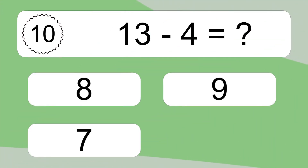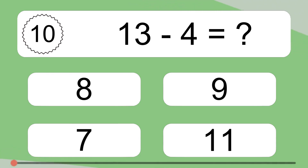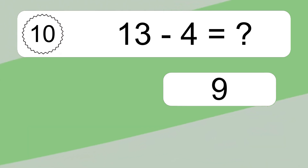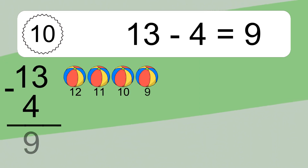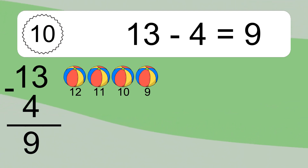13 minus 4 equals what? 13 minus 4 equals 9. Let's count it: 12, 11, 10, 9.